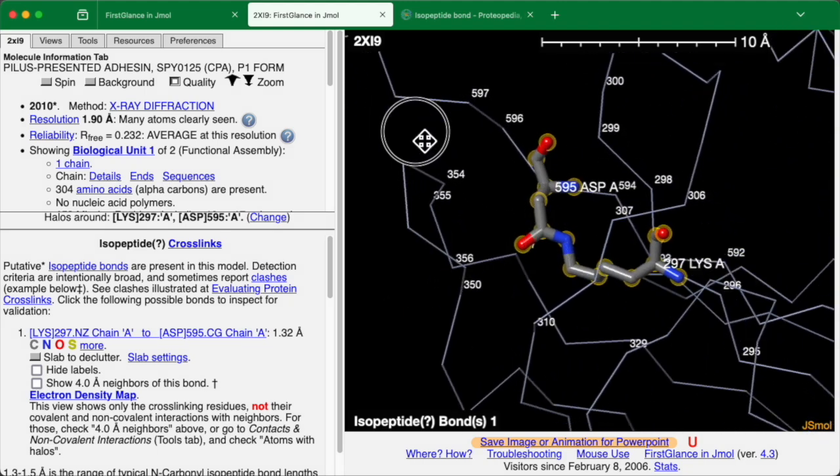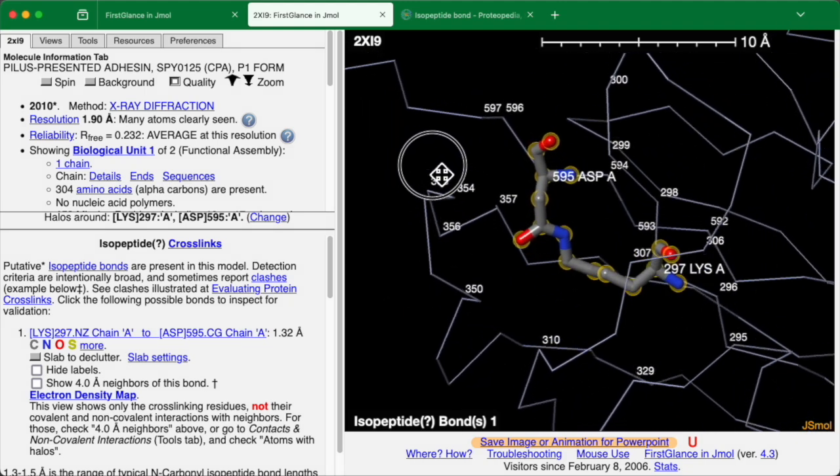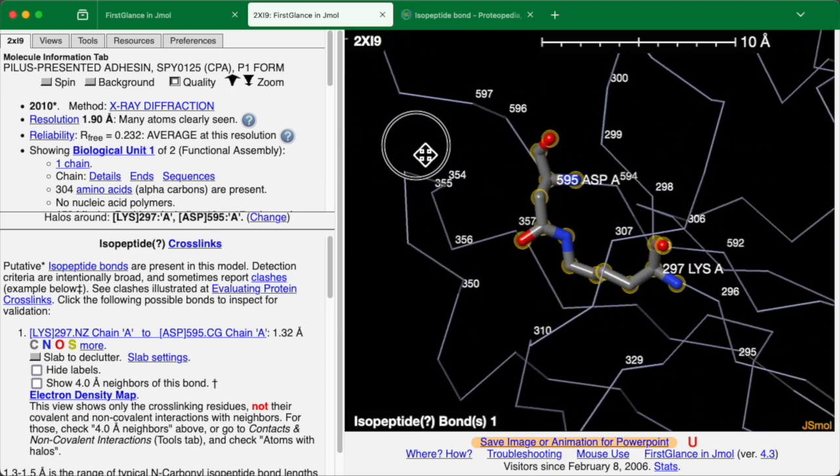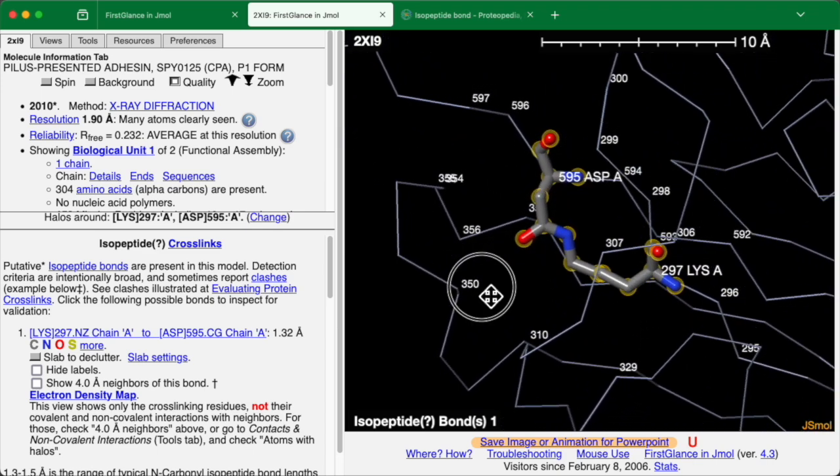Okay, this looks like an isopeptide bond. It looks legitimate. Nothing suspicious about it. How do we verify if it's real?